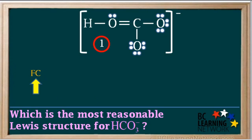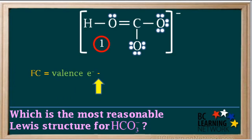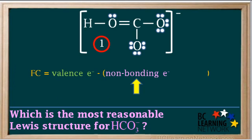Recall that the formula used to calculate the formal charge on an atom is: Fc equals the number of valence electrons the atom has minus the sum of the non-bonding electrons around the atom and the number of bonds attached to the atom.